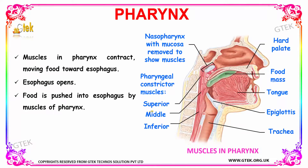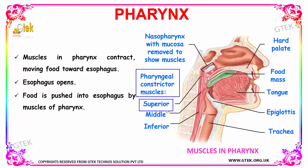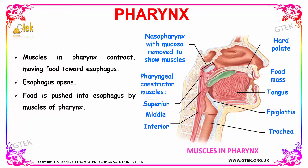The muscles located in the pharynx will contract in order to move the food into the esophagus opening. The food is pushed into the esophagus, which opens using the muscles of the pharynx. The pharynx constrictor muscles include the superior, the middle, and the inferior muscles. Your epiglottis, on closing your trachea — your windpipe — will push the food into the esophagus. This is how your pharynx pushes the food into the esophagus.